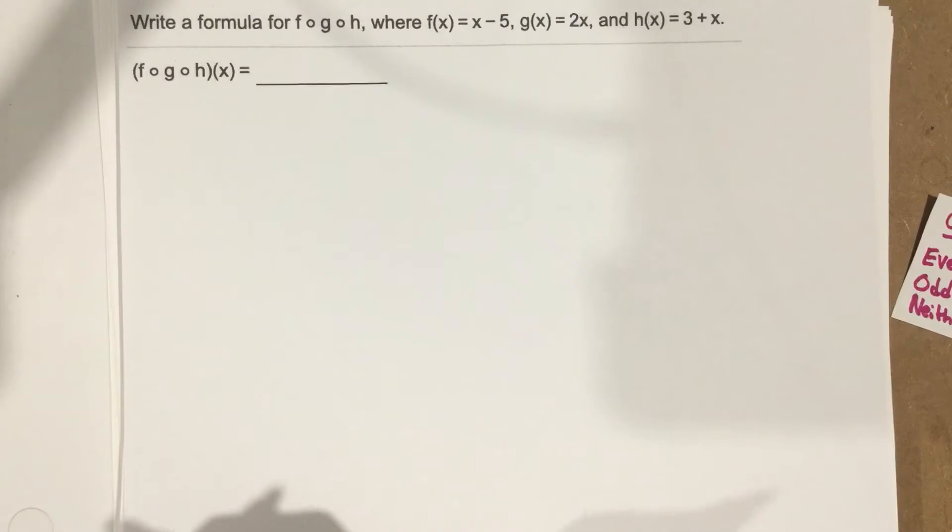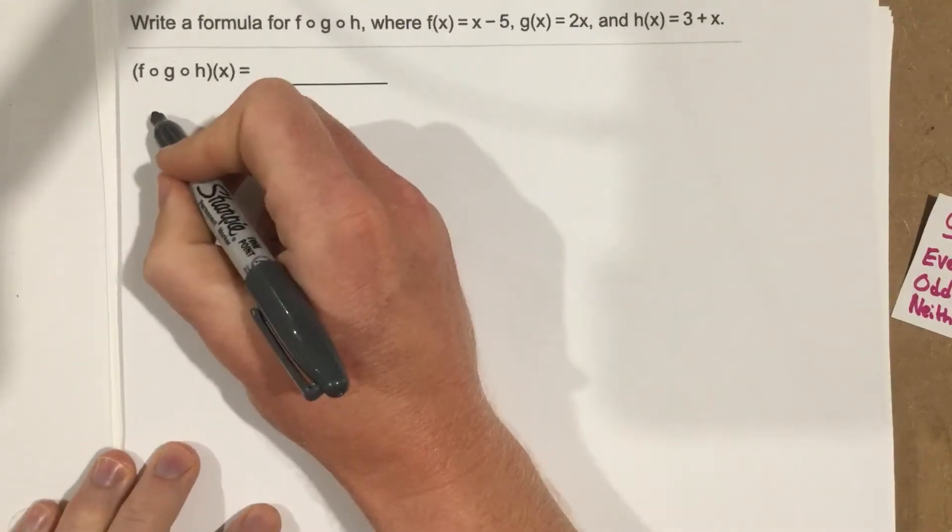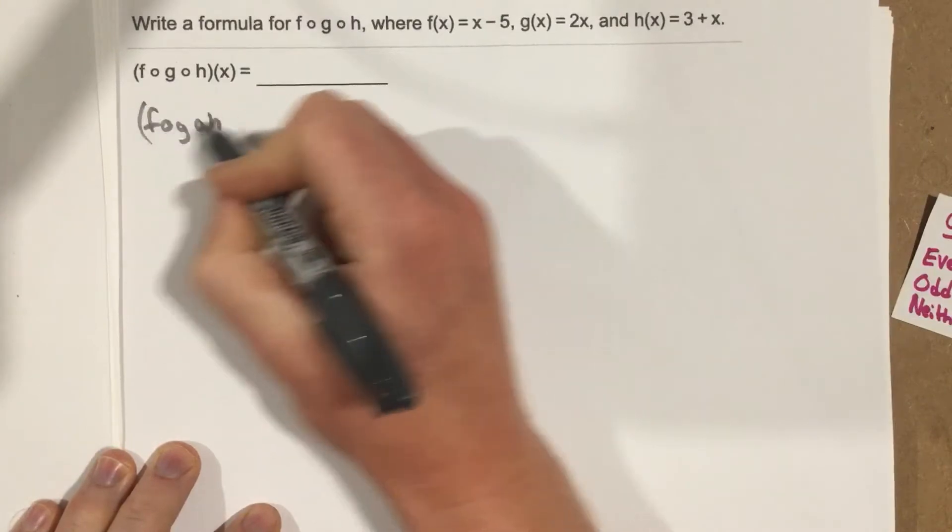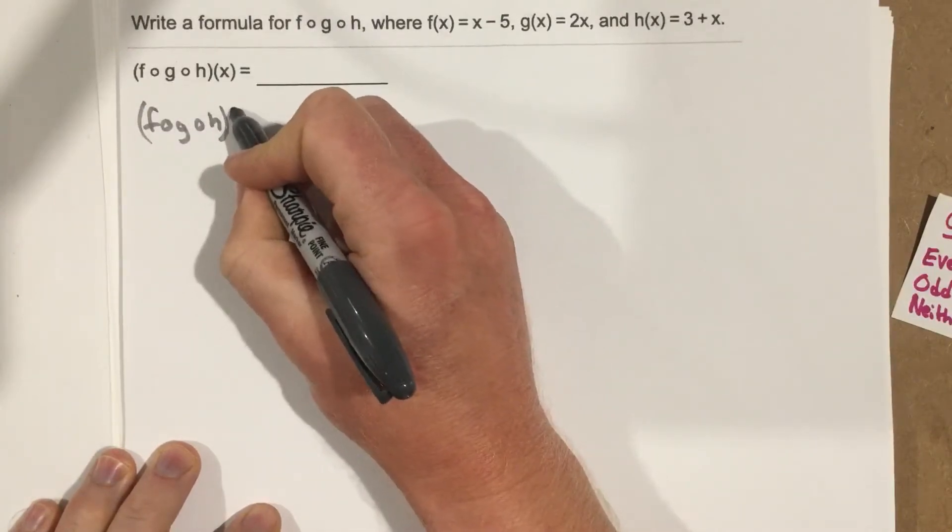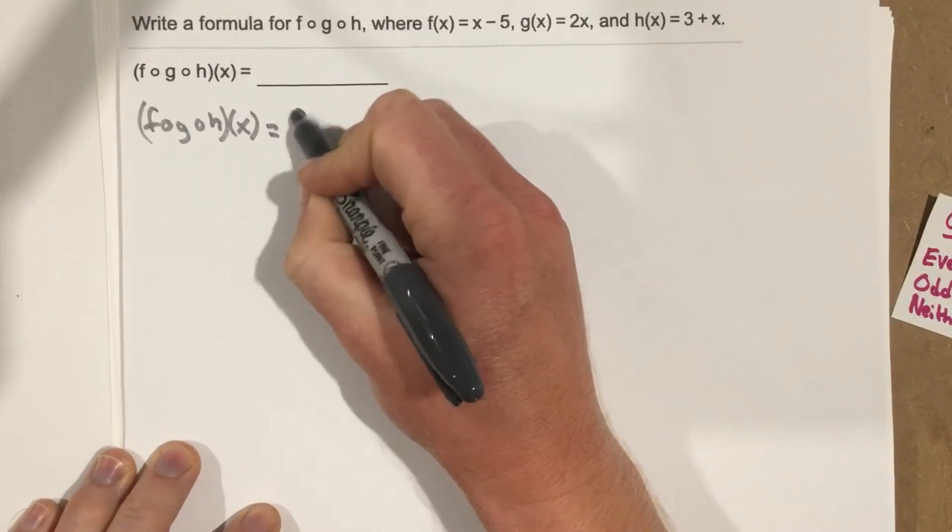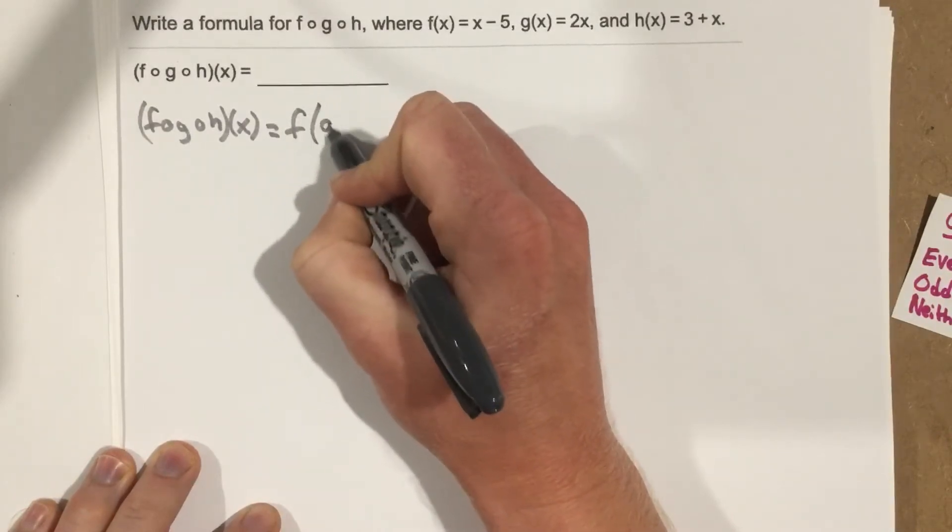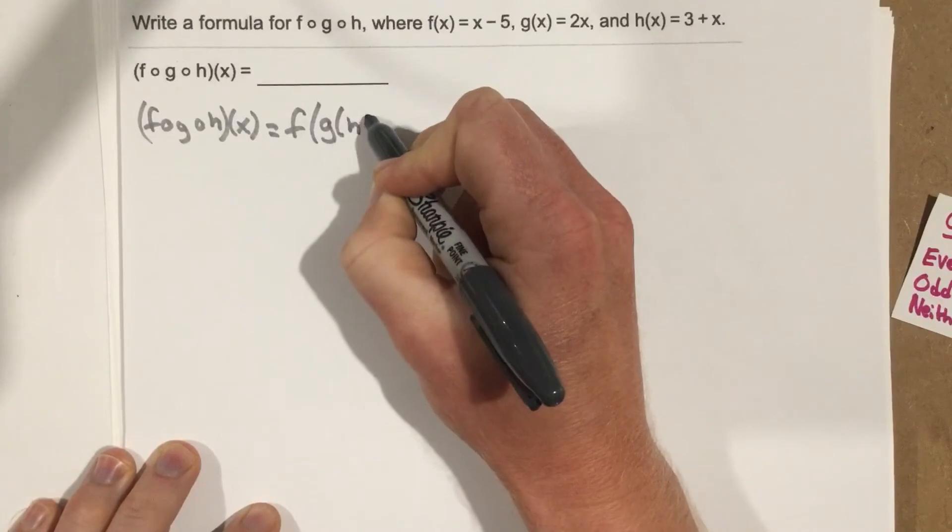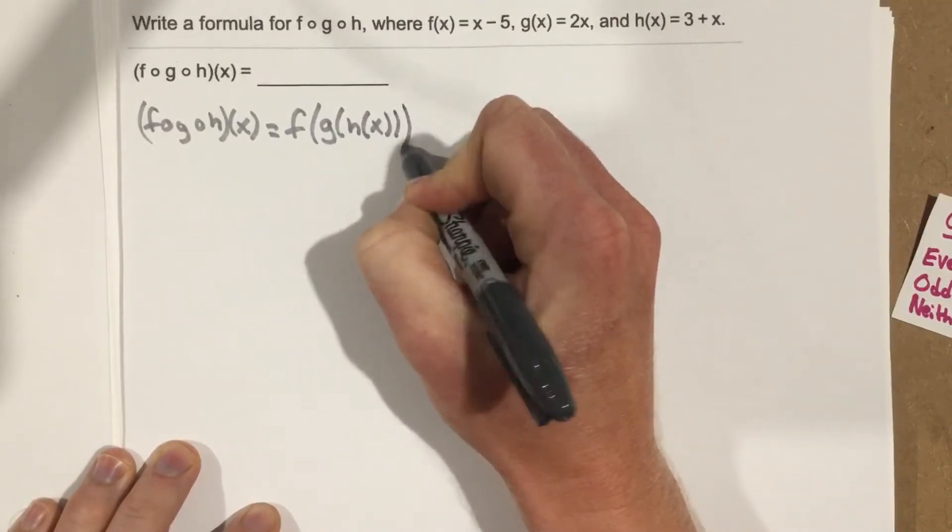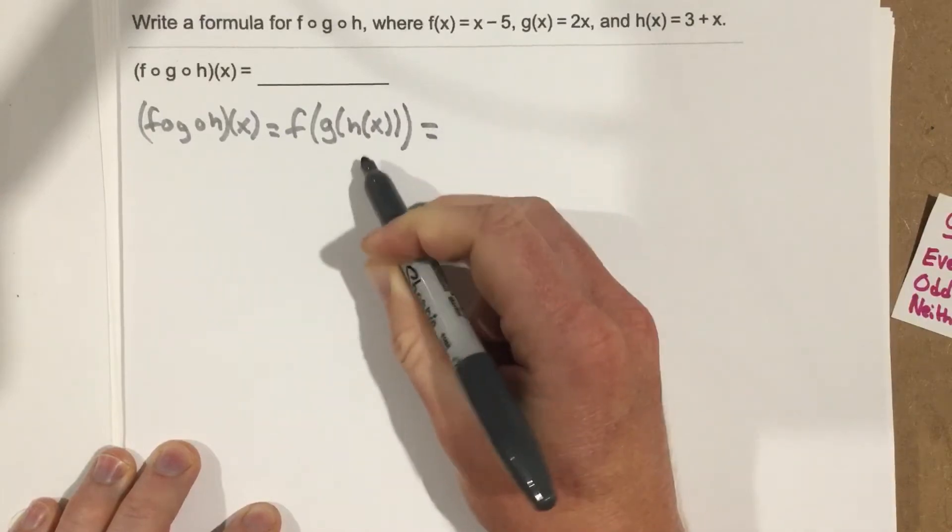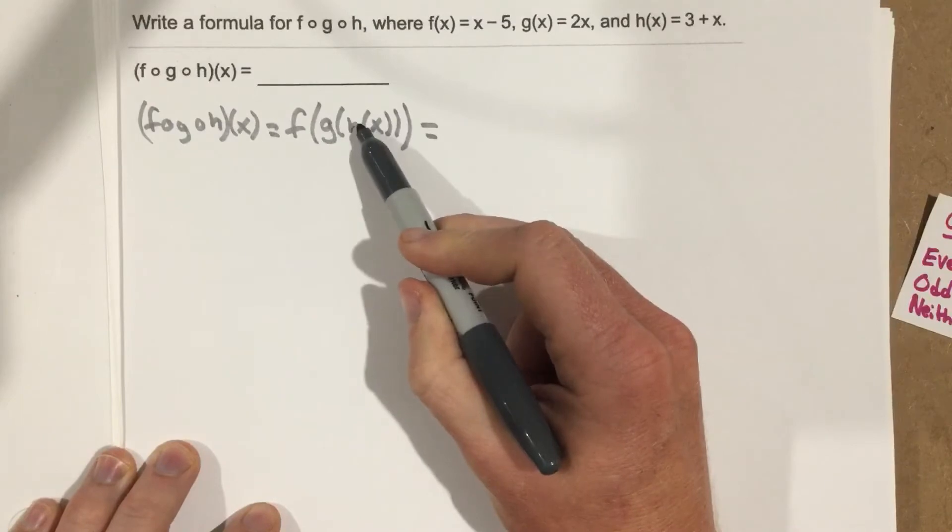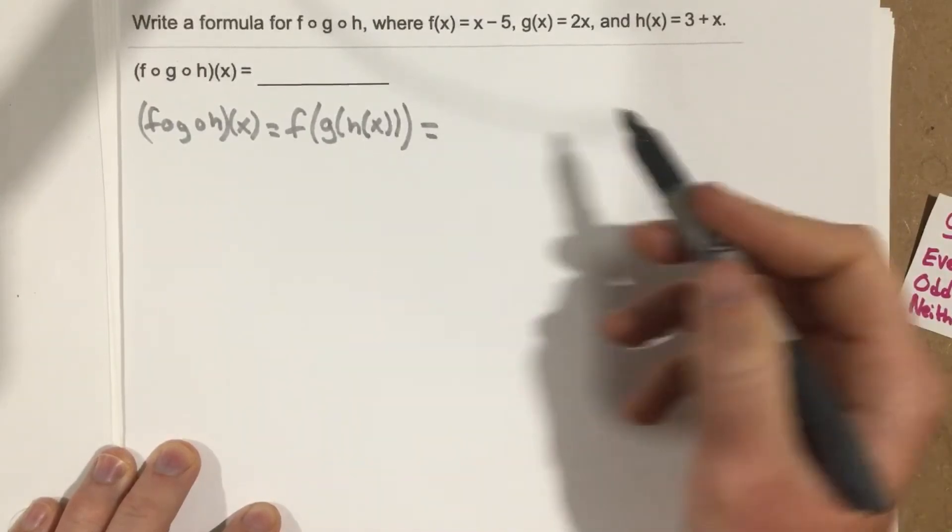So f of g of h of x. Here's how I like to start these. f of g of h of x is equal to, and I'll actually just write this as f of g of h of x. Lots of parentheses, but I kind of like to write it this way because now I can just take the h of x function and plug it in here and just kind of write it out as we go.